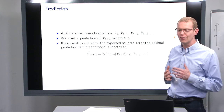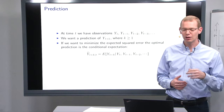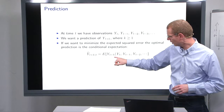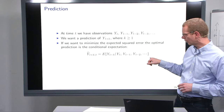Now, if we want to minimize the expected square error, then the optimal prediction is the conditional expectation, as has been said before. So, y-hat at t plus k given t equals the expectation of y at t plus k conditioning on all the previous known observations up to time now.